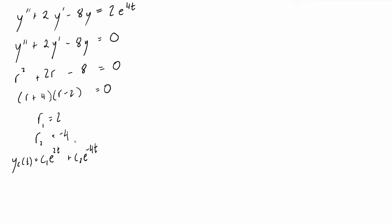We'll come back to this when we're looking for the general solution, but for now we're going to change gears and go after the particular solution. Because the right-hand side of our original differential equation has an exponential in it, the format of our particular solution is y_p(t) = Ae^(bt). We have e^(4t), so we're not concerned about the constant multiplier — just the exponent. That b value, which is 4 in this case, has to be brought into our guess for the particular solution.